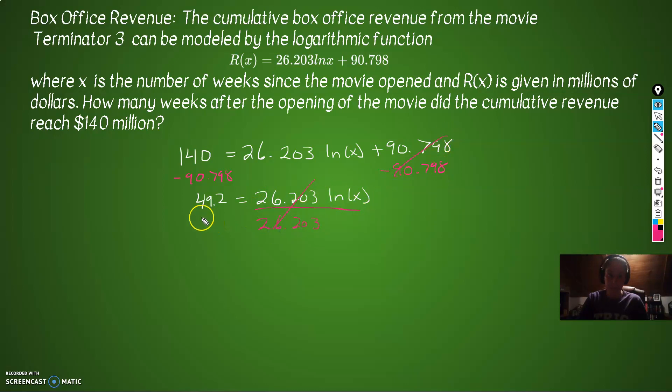Those cancel, divided by 26.203. So the right side now, our ln(x) is going to drop out, which is what we want. We just need to divide 49.2 divided by 26.203, which gives us 1.88, if I'm rounding to two decimal places.